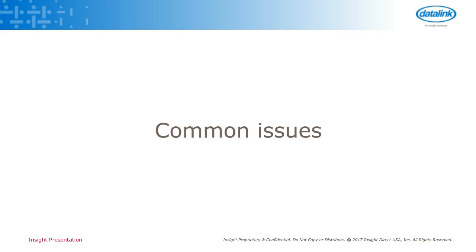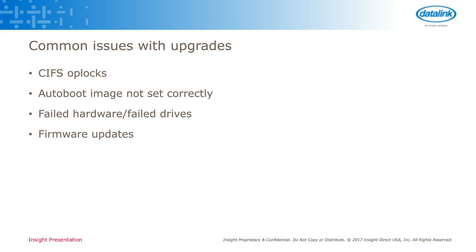Moving on to common issues. Especially if you're going through the GUI, the upgrade can sometimes not break CIFS op-locks. What that means is if you've got a client actively accessing the system, it can cause those failovers not to function appropriately. If you feel comfortable doing it, you can go into the command line and force the takeover, which will keep the upgrade moving along. If not, reach out to support and have them verify everything is healthy and that forcing the takeover isn't going to break something else.